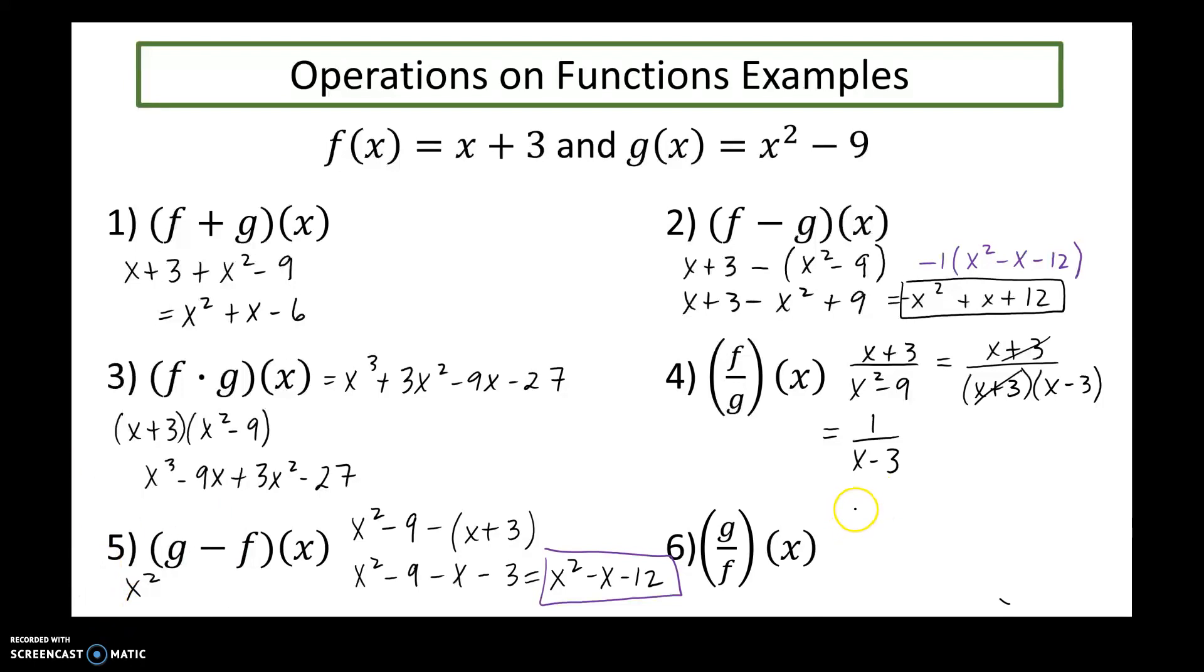All right, now g over f, so x squared minus nine, divided by x plus three. This becomes x plus three, x minus three, all divided by x plus three. So these cancel, and my resulting quotient would be x minus three.